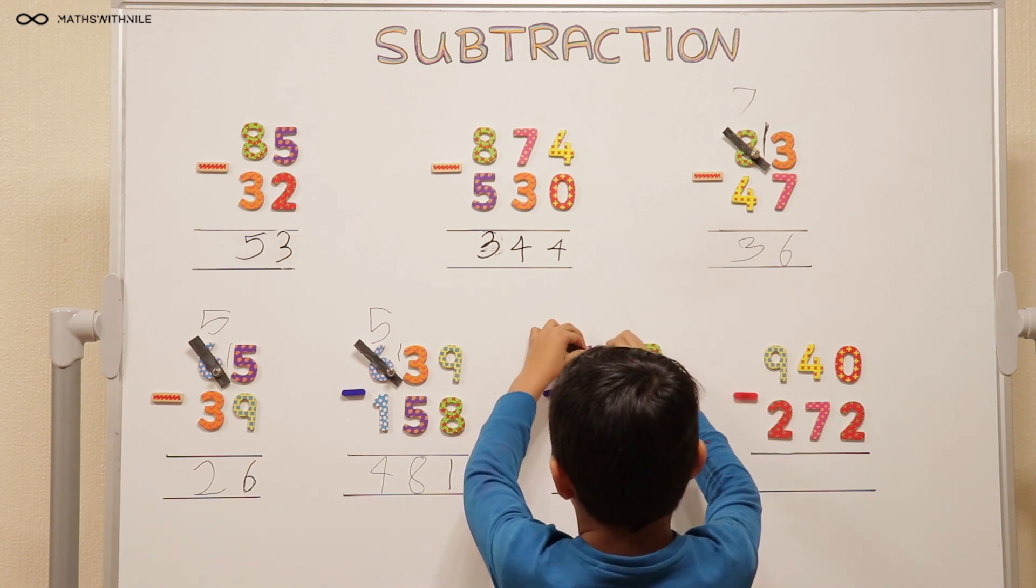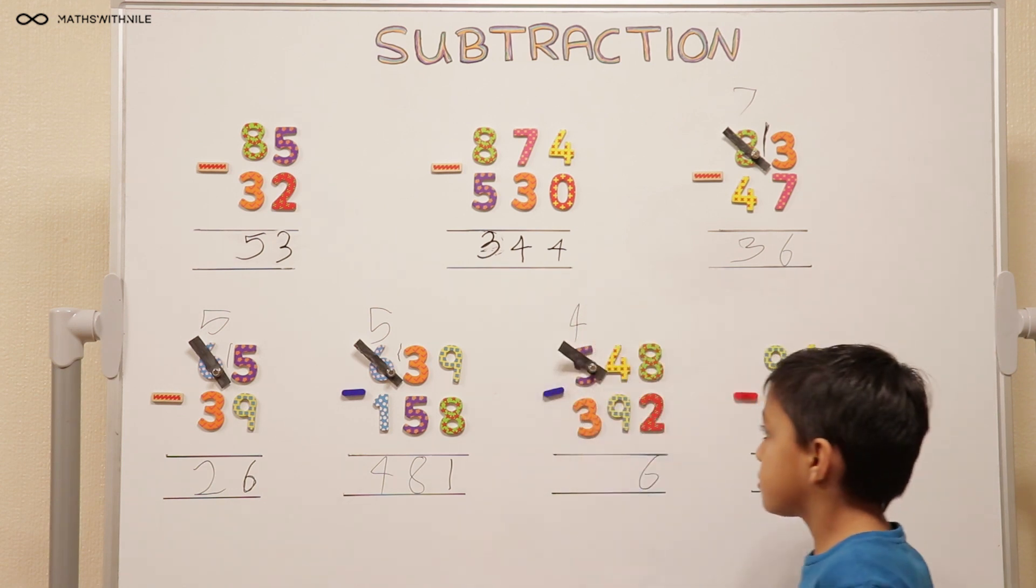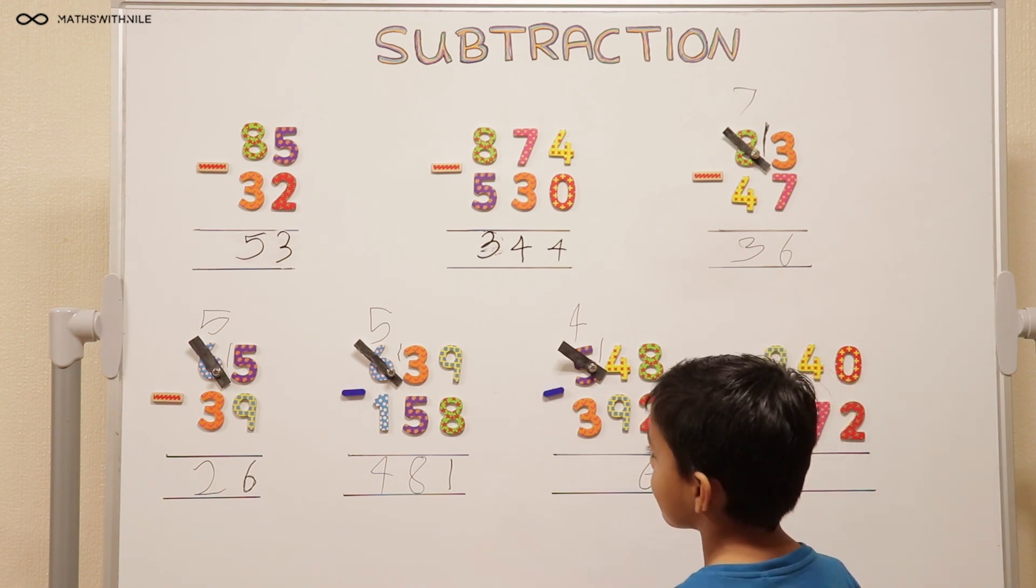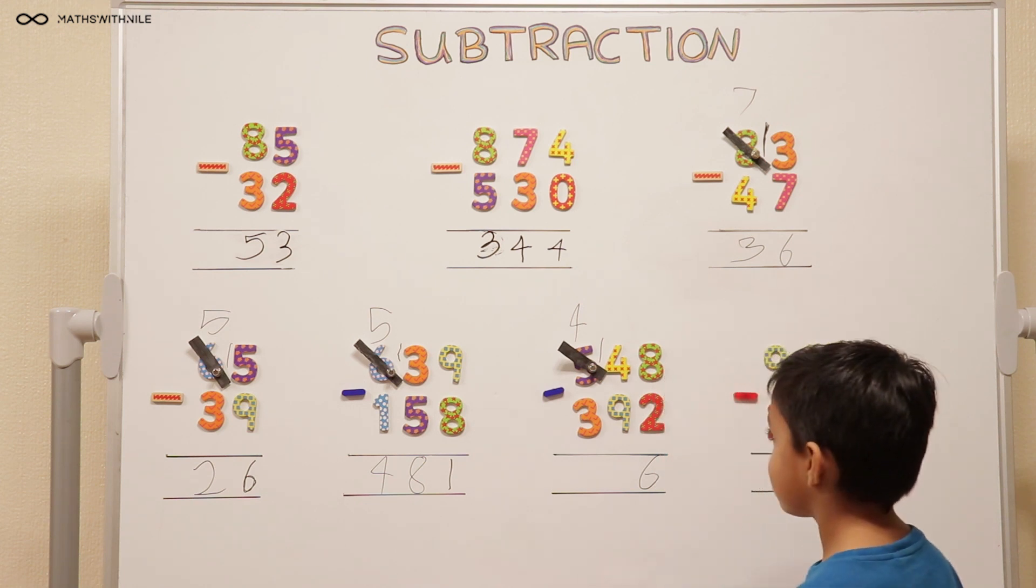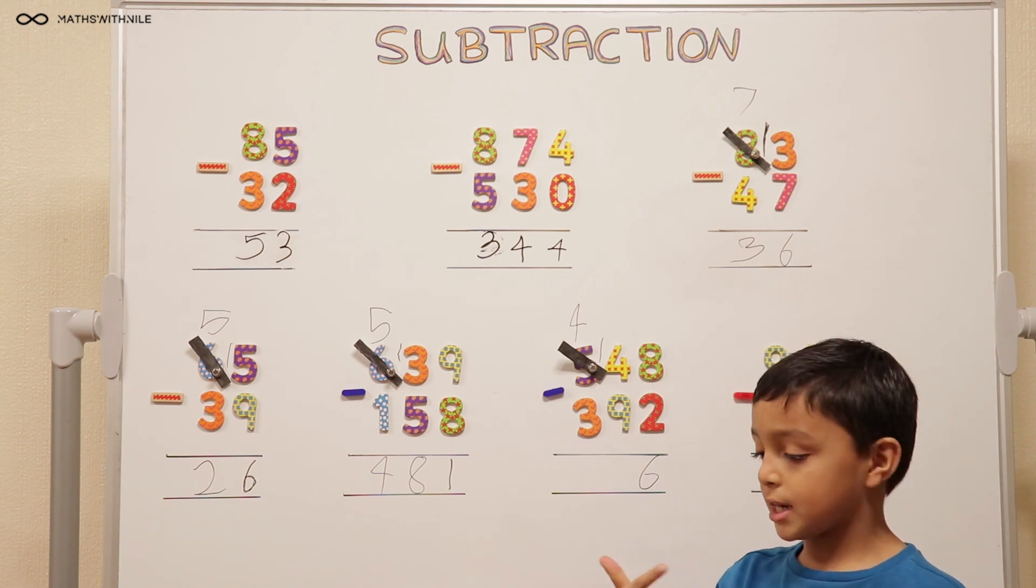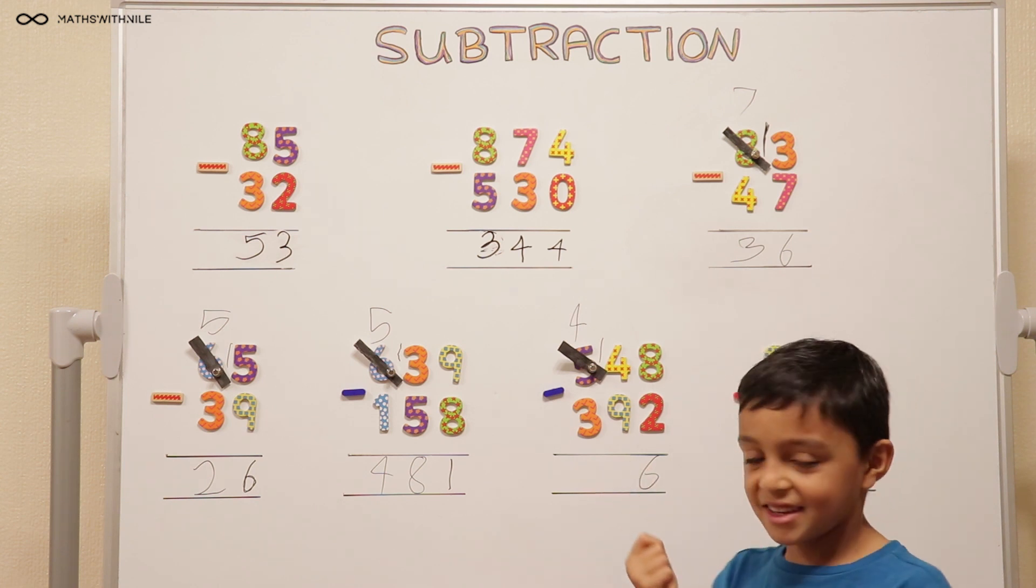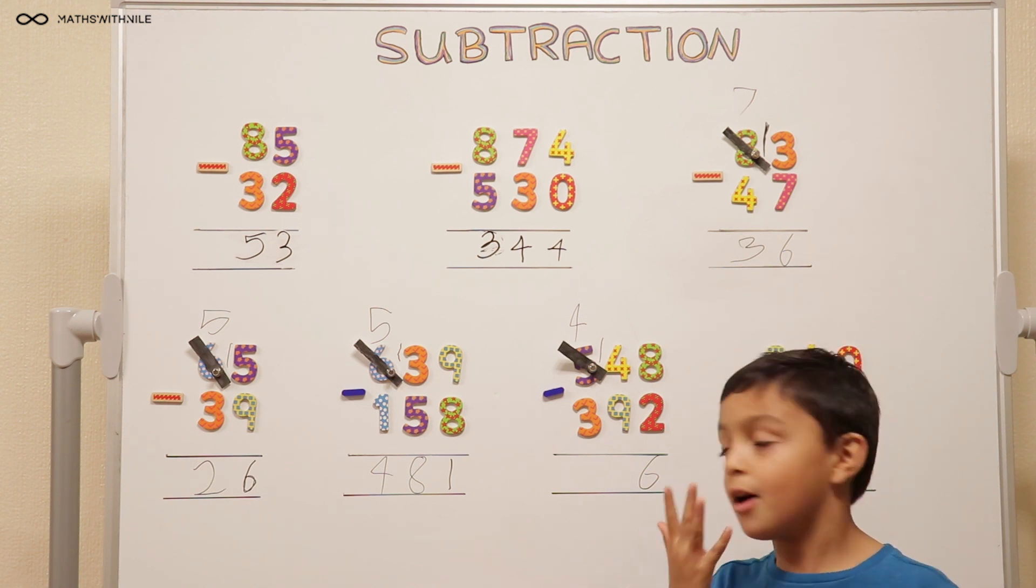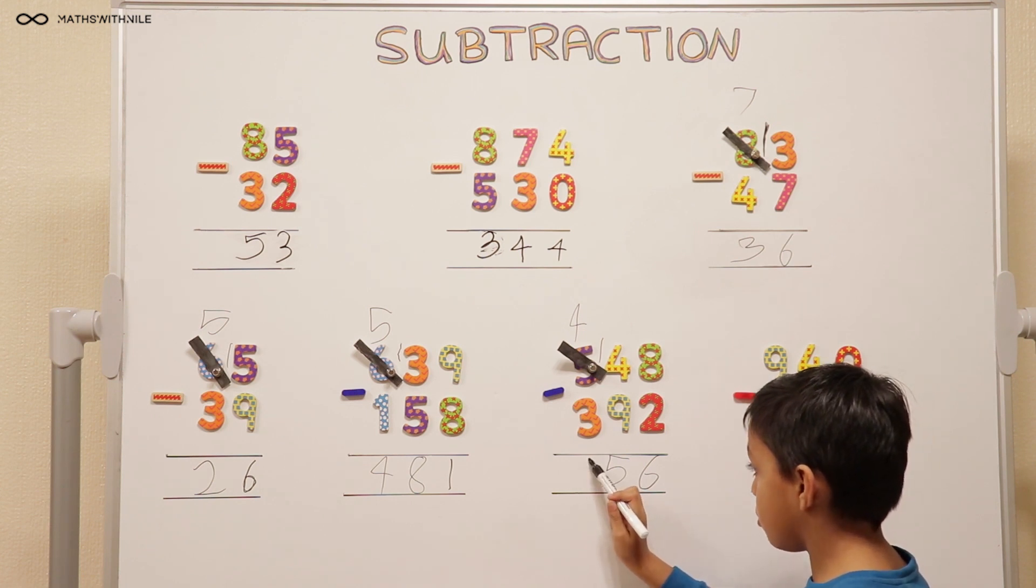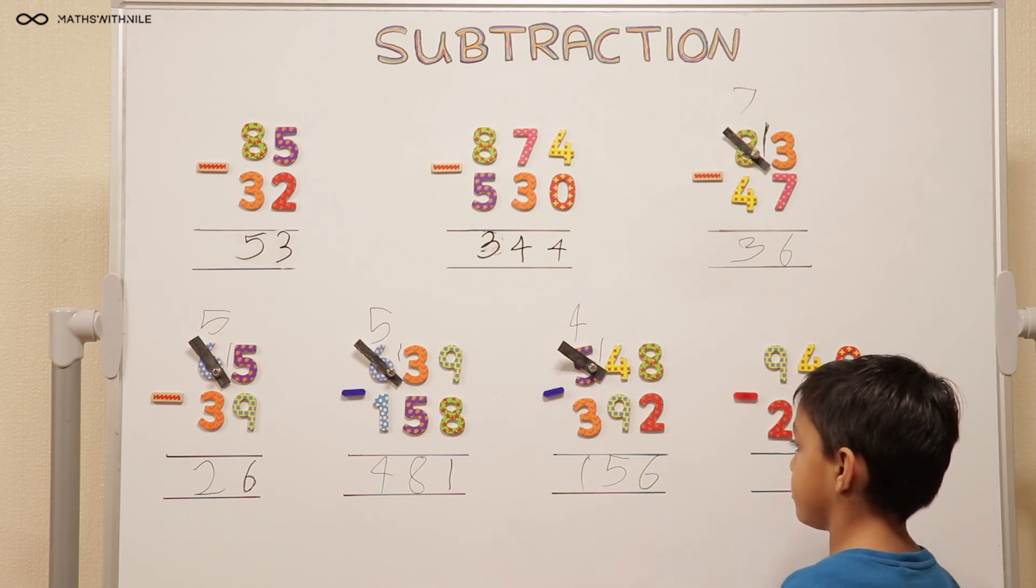I'm left with 4. Make sure we can see. So we put the 1 there. So 14 take away 9. 9, 10, 11, 12, 13, 14. So 5. And 4 take away 3 equals 1. So the answer is 156.